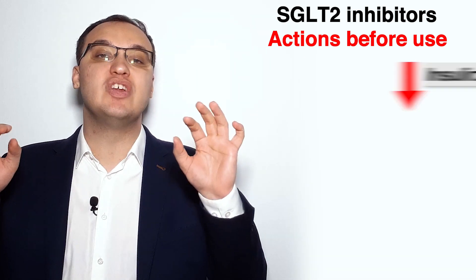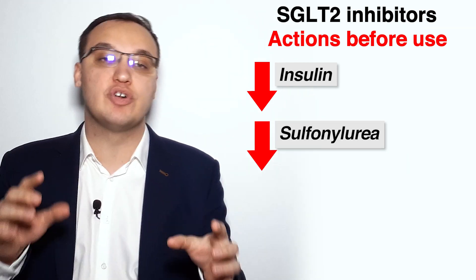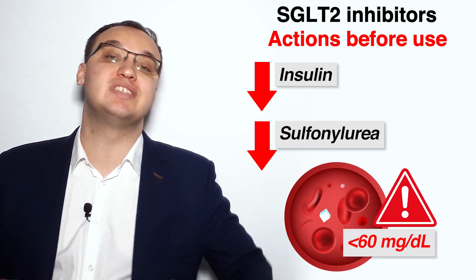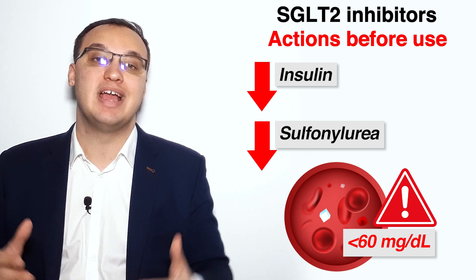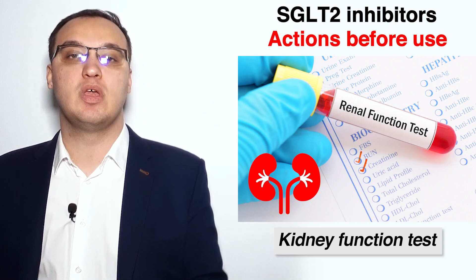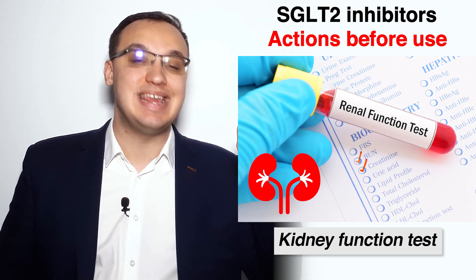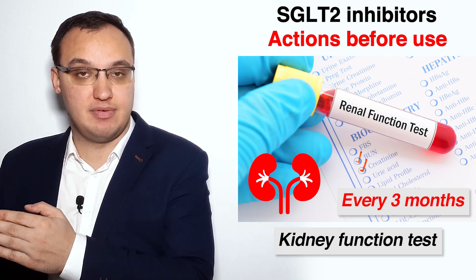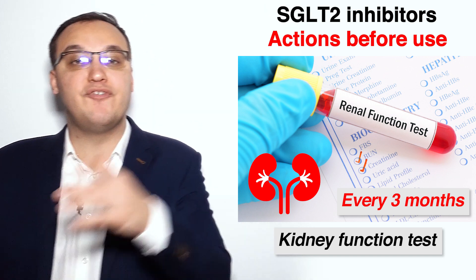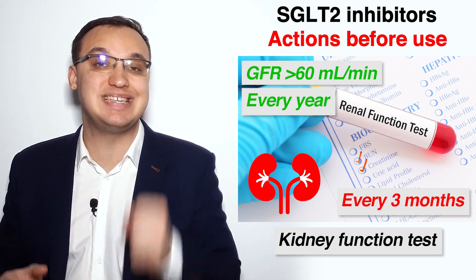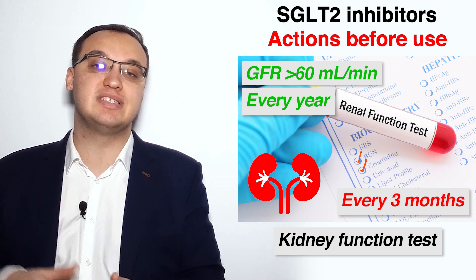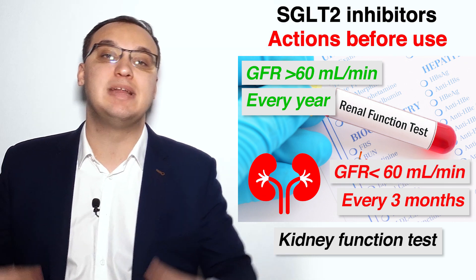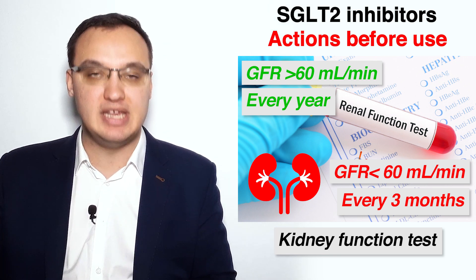It is also very important to reduce insulin or sulfonylurea before starting SGLT2 inhibitors, because otherwise the risk of hypoglycemia — a blood sugar level of less than 60 mg per deciliter — is very high. Kidney function must be checked before starting and then every three months. If GFR remains stable above 60 ml per minute, monitoring can be reduced to annually; if below 60, continue every three months.